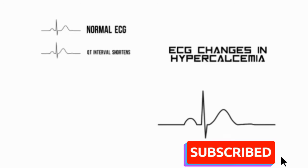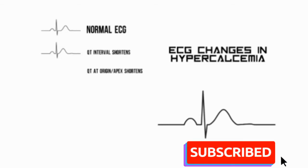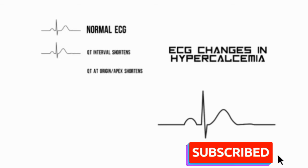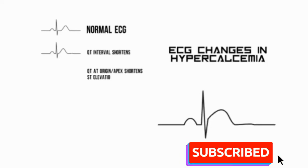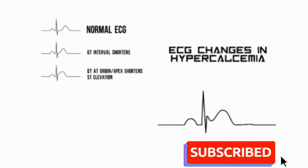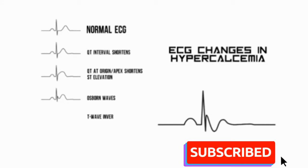The QT interval can shorten as a whole, but it can also shorten from the origin of the T wave or the apex of the T wave. This variability results in T wave changes that resemble ST elevation, Osborne waves, and even T wave inversion or biphasic T waves.